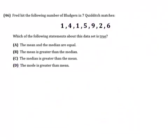Okay, Fred, number 46. Fred hit the following number of bludgers in seven Quidditch matches: 1, 4, 1, 5, 9, 2, 6.